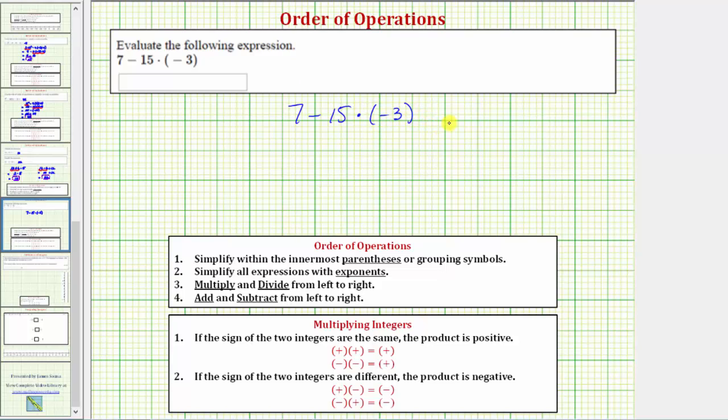Notice how the expression contains two operations. We have subtraction here and multiplication here. Referring to the order of operations, we can actually skip step one because we cannot simplify inside the parentheses or grouping symbols. We can also skip step two because we don't have any exponents.